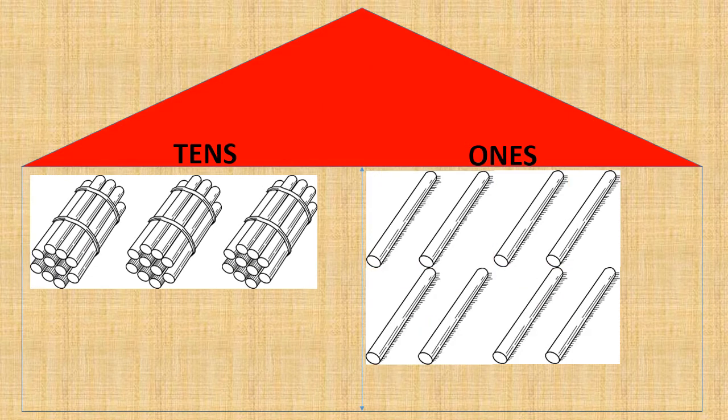Now let's count the bundle of tens here. One, two, three — three tens. And in ones place, we can see one, two, three, four, five, six, seven, eight. So we have three tens and eight ones, which gives us the number thirty-eight.